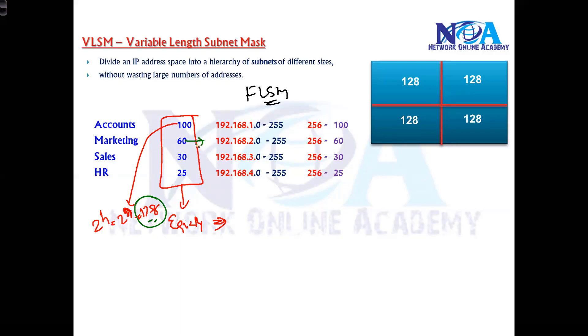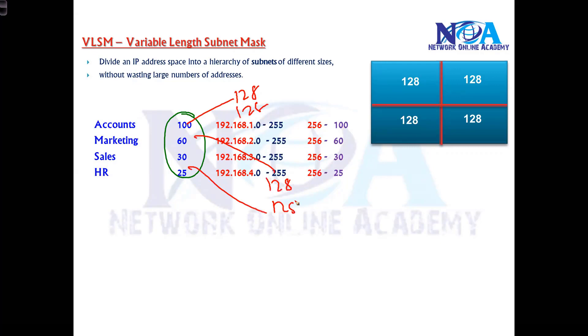I cannot go with 64 because that won't satisfy the accounts requirement, so I'll go with the higher number - 128. I'll divide the network into 128, 128, 128, 128. Maybe I use 192.168.1.0 subnet for the first two and 192.168.2.0 subnet for the other two.